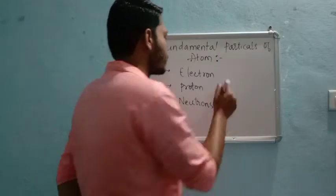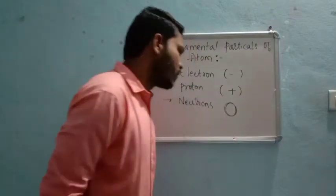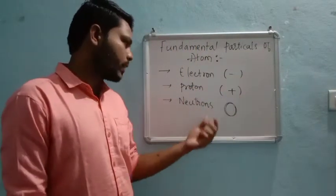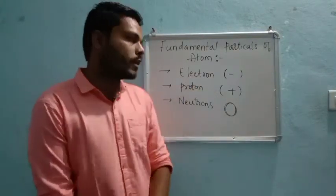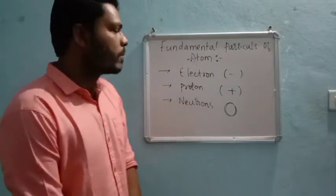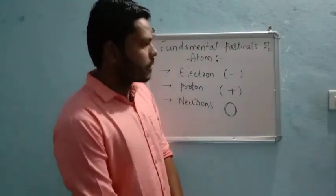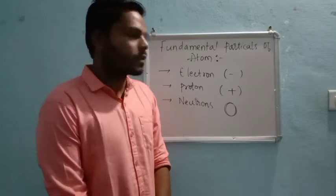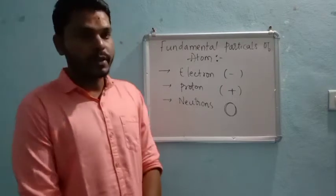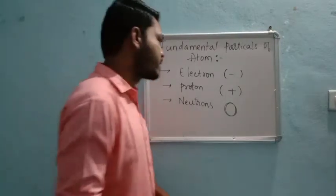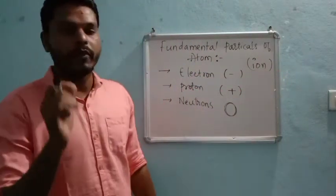Electron is a negatively charged species, proton is a positively charged species, and neutron has no charge. In an atom, the number of positive charges must equal the number of negative charges. If the number of electrons is more than the number of protons, the species gets a negative charge and we call it an ion, not an atom. These basic things are very important.